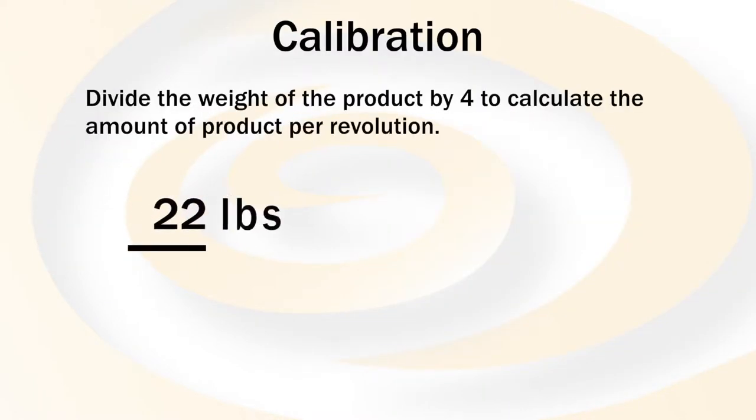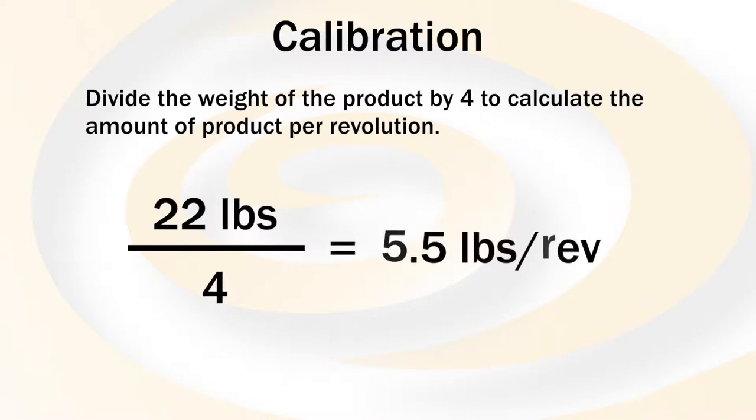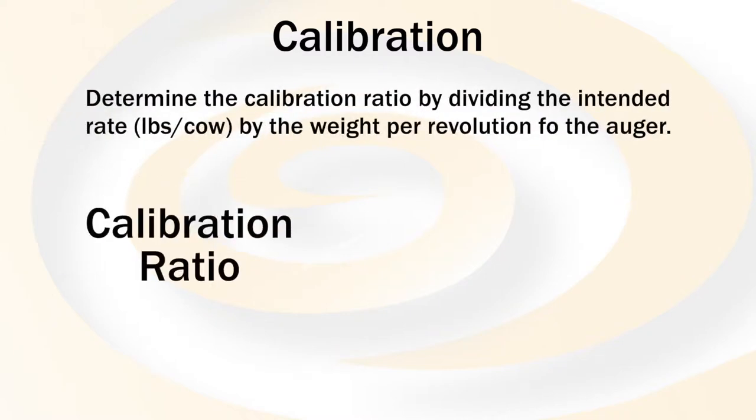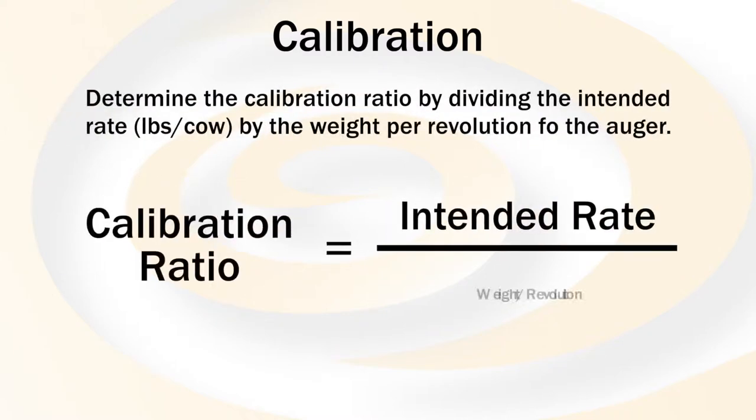Divide the weight of the product by 4 to calculate the amount of product per revolution. Determine the calibration ratio by dividing the intended rate by the weight per revolution of the auger.